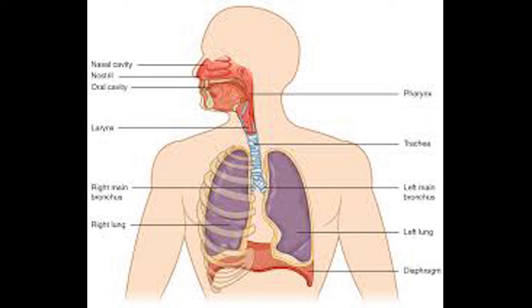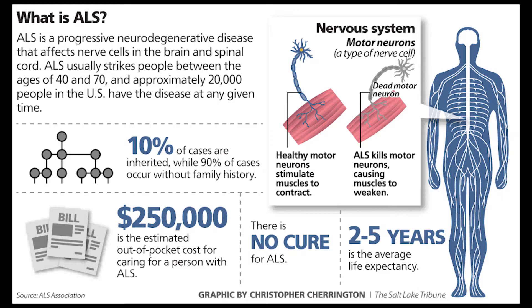Our muscles also require the digestive system because the digestive system extracts nutrients from food that we eat, and our muscles require nutrients to function properly. The respiratory system is also necessary, as without it we would not be able to get oxygen, which is vital to our muscles.